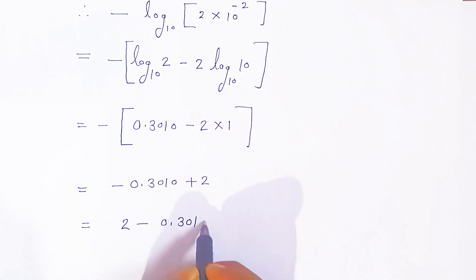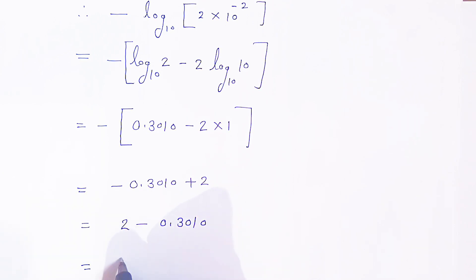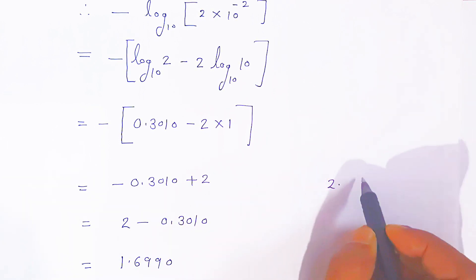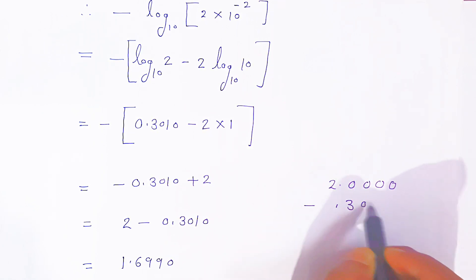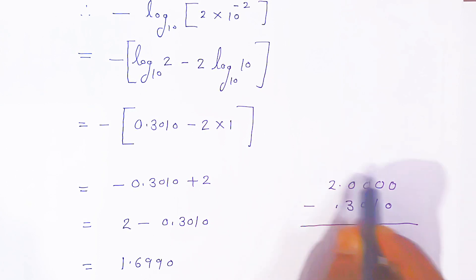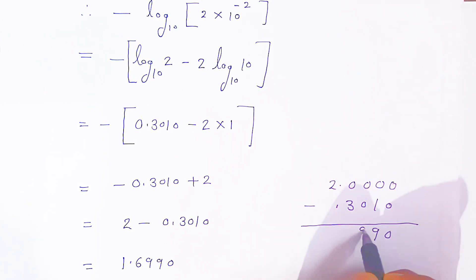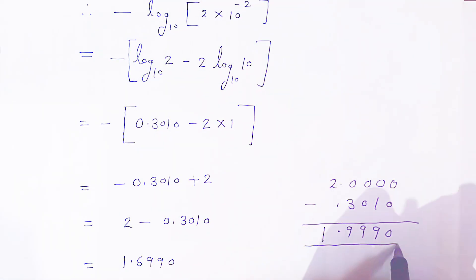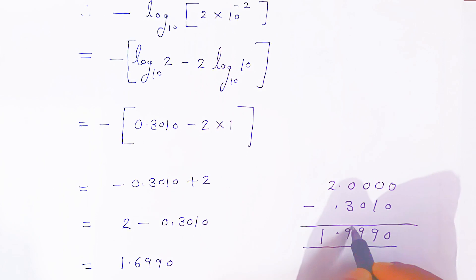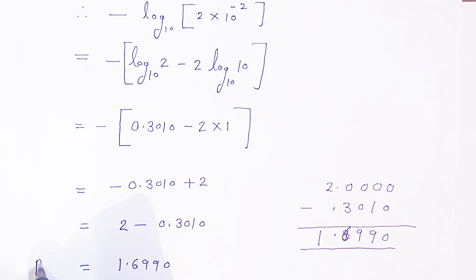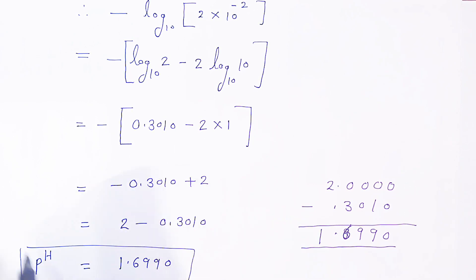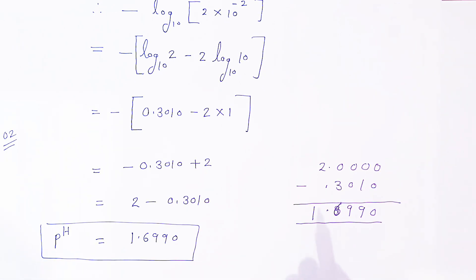Now subtracting: 2 minus 0.3010 equals 1.6990. So the pH of 0.01 molar sulfuric acid is 1.699. This is how you calculate it in the examination for a two-mark question. If you like this video, please share it and subscribe. Thank you very much, have a nice day, God bless you.